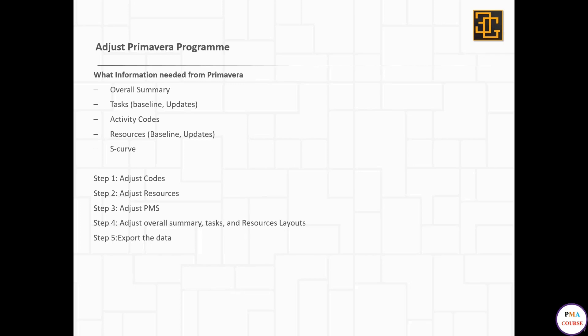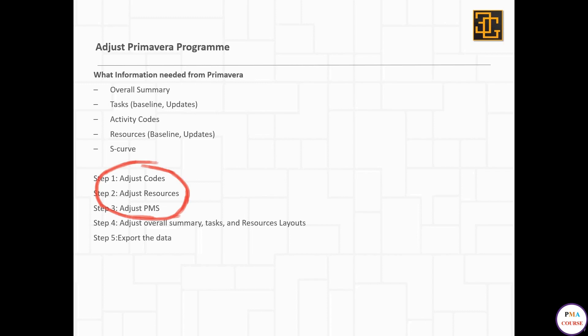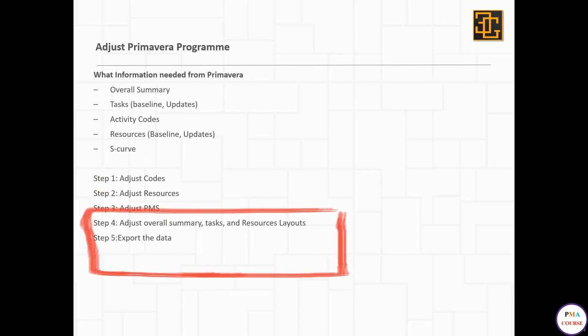Hi, in this session we are going to continue how to adjust your Primavera program. In the last session we adjusted the codes, we adjusted the resources, and we adjusted the PMEs. However in this session we are going to adjust the layouts in order to get the overall summary information, the tasks, and the resources.